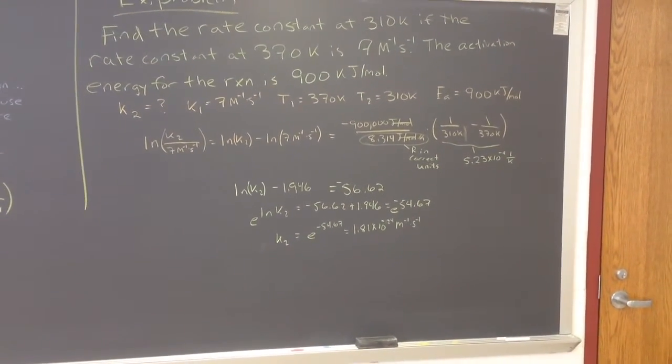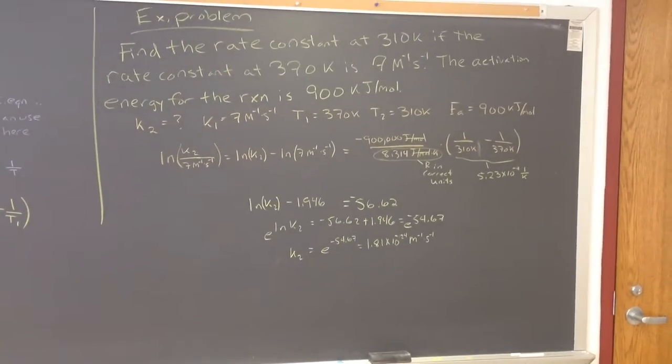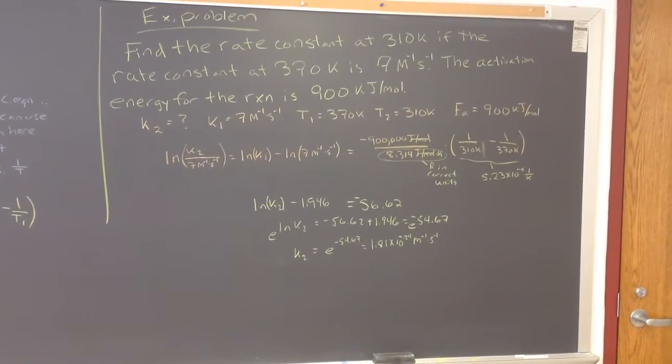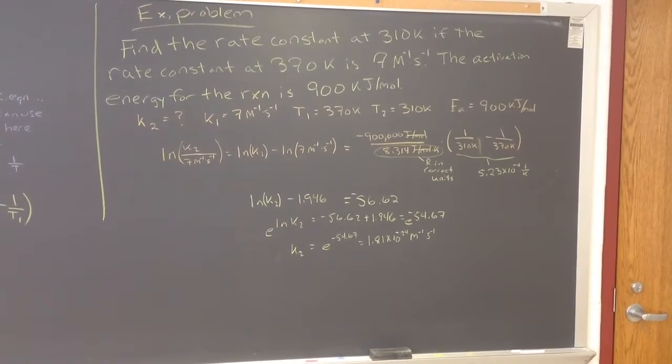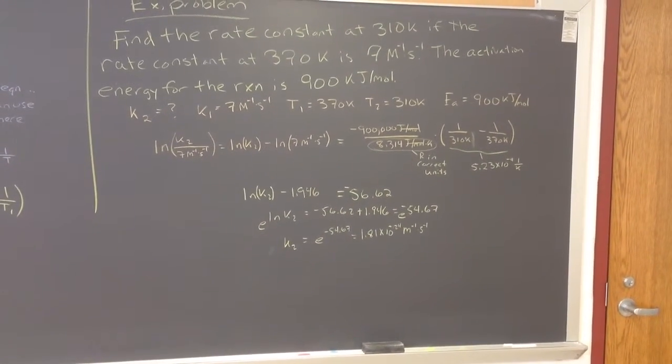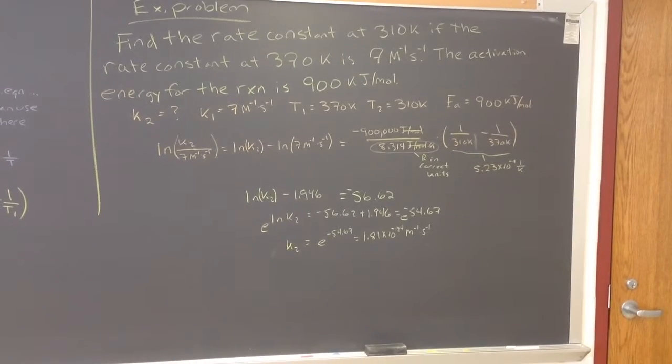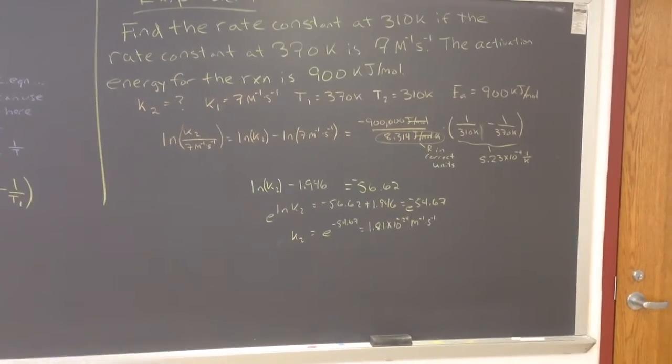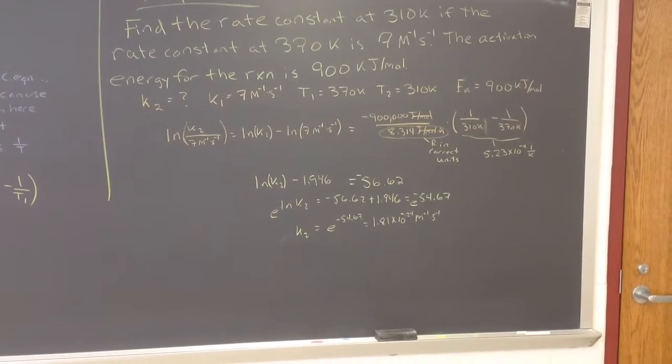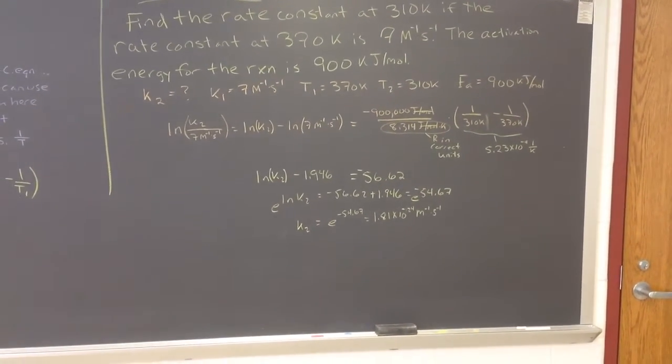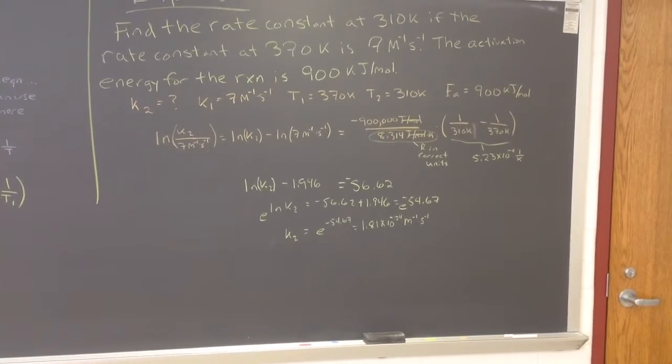So what I did first was identify the variables and what we needed to know, want to solve for k2, know all the other four factors here. So we plug those in now. And remember, we can take, we take the natural log of something over something else the same as subtracting natural log of, so in this case k2 minus natural log of 7, right? And so then we worked through everything.